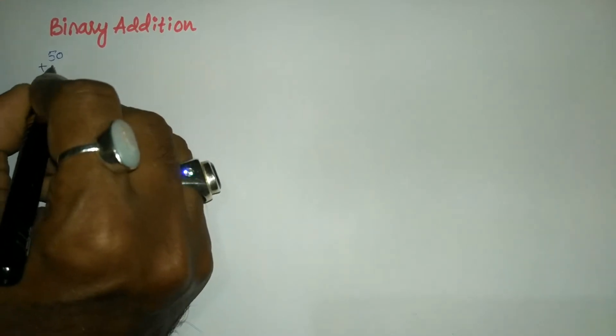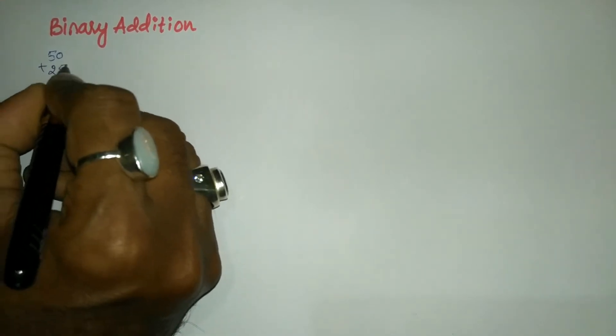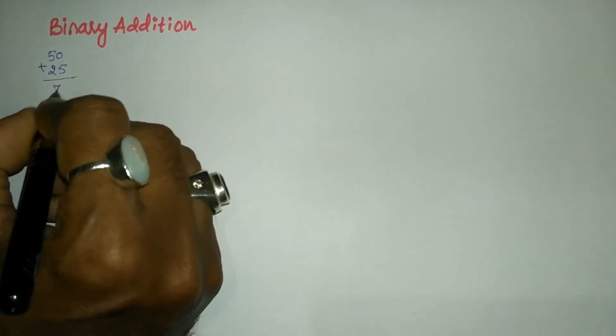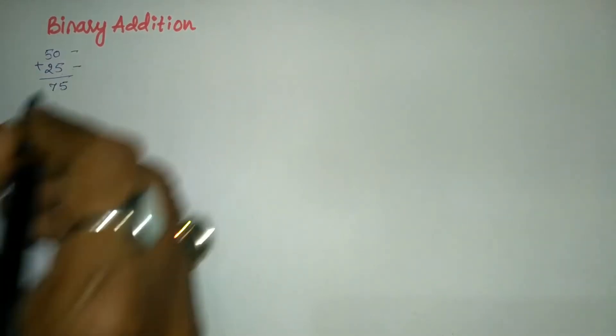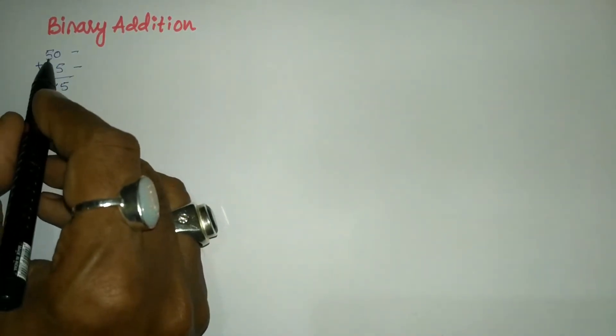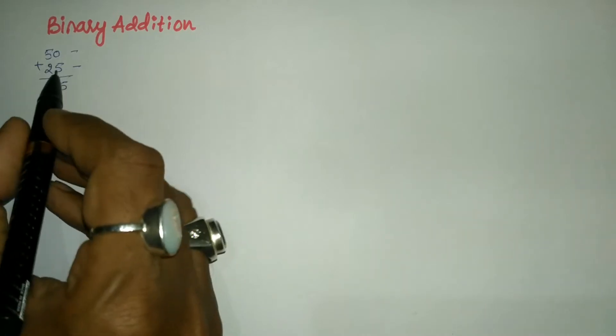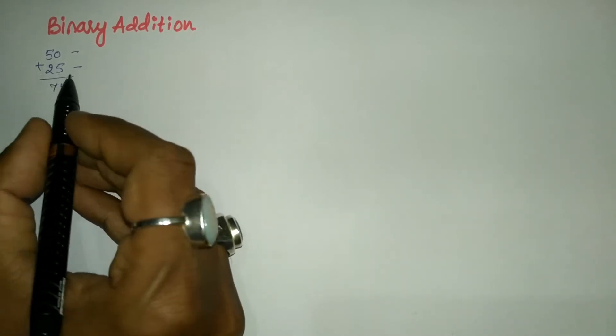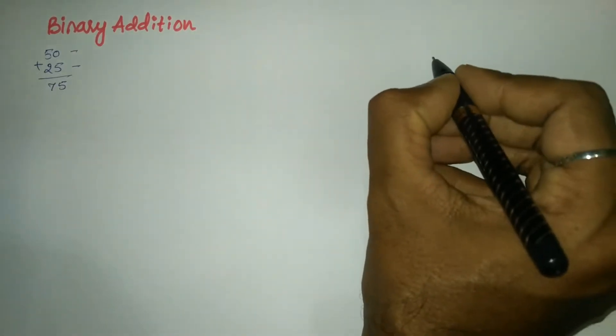Hello and welcome to Vision Academy. In this video we are going to learn binary addition. Let us take two decimal numbers to be added: 50 plus 25, which results in 75. We have to convert both numbers, 50 and 25, into binary notation.